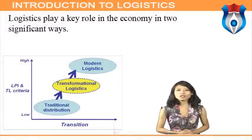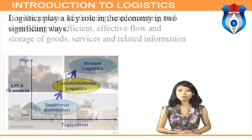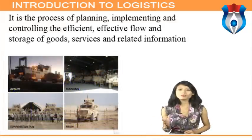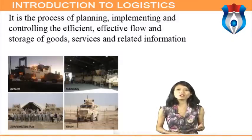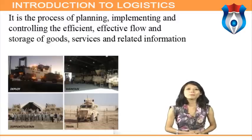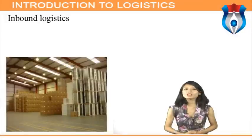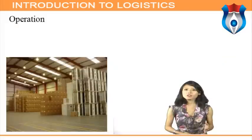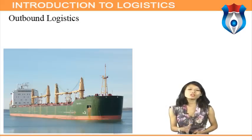Logistics plays a key role in the economy in two significant ways. First, logistics is one of the major expenditures for business — accounting for around 15 to 20 percent of GDP. It is a process of planning, implementing, and controlling the efficient, effective flow of goods, services, and related information from point of origin to point of consumption. Primary inbound logistics activities are associated with receiving, storing, and disseminating inputs; outbound logistics activities are associated with collecting, storing, and physically distributing the product to buyers.